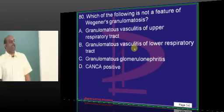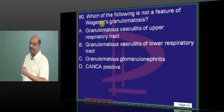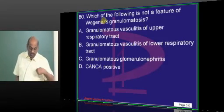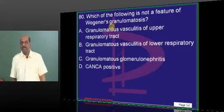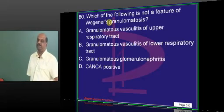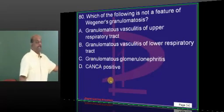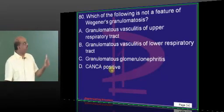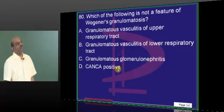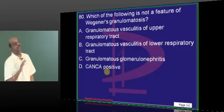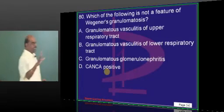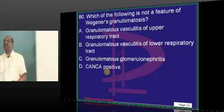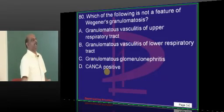Wegener's granulomatosis. Upper respiratory, that is the sinuses. Lower respiratory, that is the lungs. You have cavitating lesion with hemoptysis in the patient and also involvement of the kidney with hematuria combination. But if you look at the kidney biopsy, you don't find any granulomas. Granulomas are only part of the upper and lower respiratory tract involvement in Wegener's.